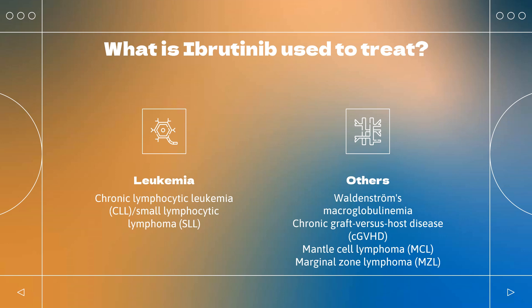Chronic graft-versus-host disease (cGVHD): In the US, it is approved in patients aged one year and older after prior failure of one or more lines of systemic therapy. In Canada, it is approved in adults with steroid-dependent or refractory cGVHD.